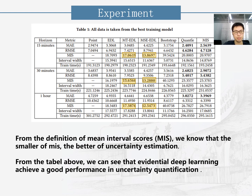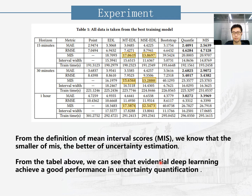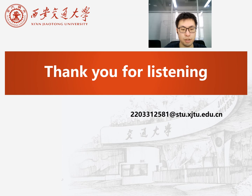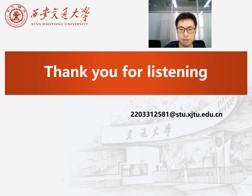The last section is the experiment. The results of the two best performing models are shown in bold. From the definition of the Mean Interval Score, we know that a smaller MIS indicates better uncertainty estimation. From the table, we can see that evidential deep learning achieves good performance in uncertainty quantification. More details are in the paper. If you have any questions about this paper or this video, please feel free to contact me. My email is shown here. Thank you for listening.